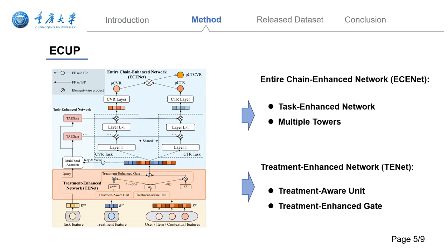To tackle these challenges, we introduce a novel model named ACUP, comprising two parts: ESINET and TENET. ESINET incorporates task prior information to better capture behavioral changes across different tasks. Meanwhile, TENET achieves adaptive embedding adjustments under various treatments through bit-level feature interactions.